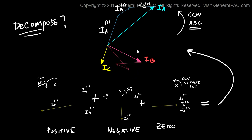What we get is our original phasor. So I_B positive sequence is added to I_B negative sequence, which is added to I_B zero sequence. And we get our original phasor.